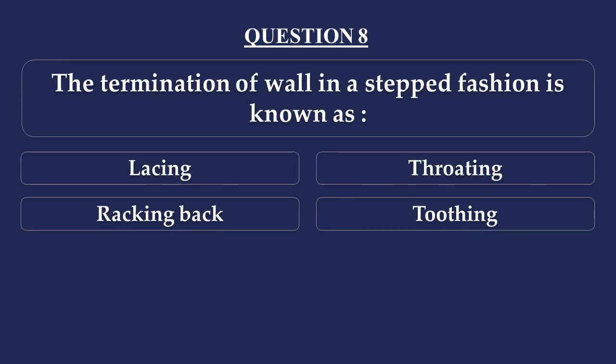Question number 8. The termination of a wall in a stepped fashion is known as: Option A - Lacing, Option B - Toothing, Option C - Racking back, Option D - Toothing. When a wall's termination is done in a step-by-step fashion, that arrangement is called racking back. The answer is Option C: Racking back.